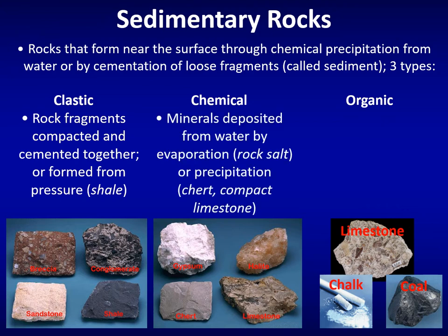Chemical sedimentary rocks are composed of minerals deposited from water, either by evaporation leaving minerals behind or by chemical precipitation where dissolved minerals cling to existing rocks and minerals to form thick deposits. Gypsum and halite are evaporite examples. Chert and limestone are also chemical sedimentary rocks formed by chemical precipitation from water.